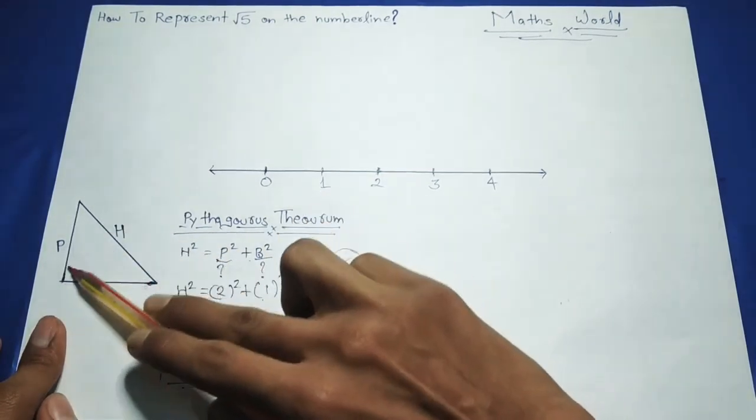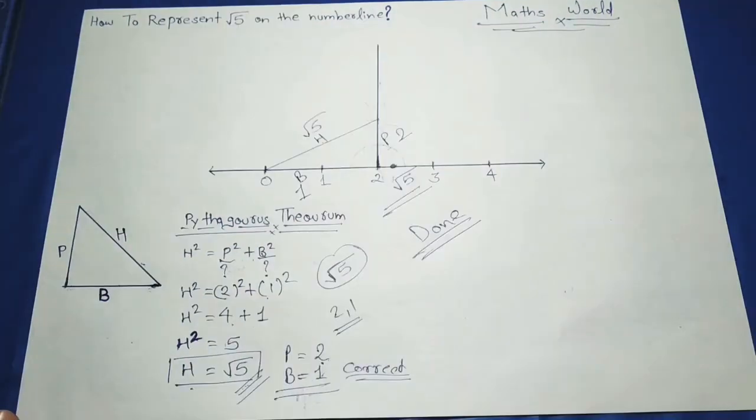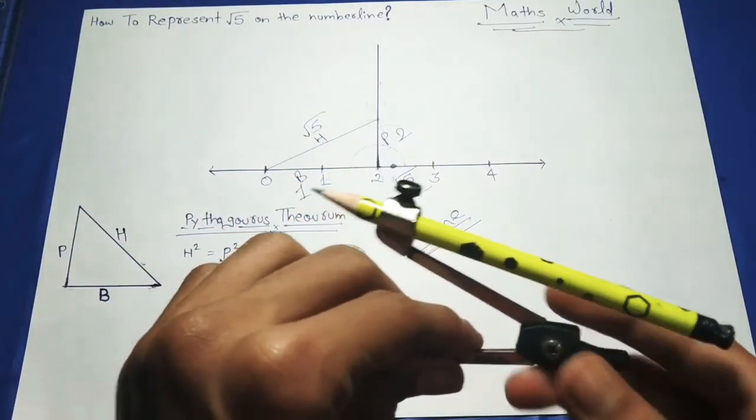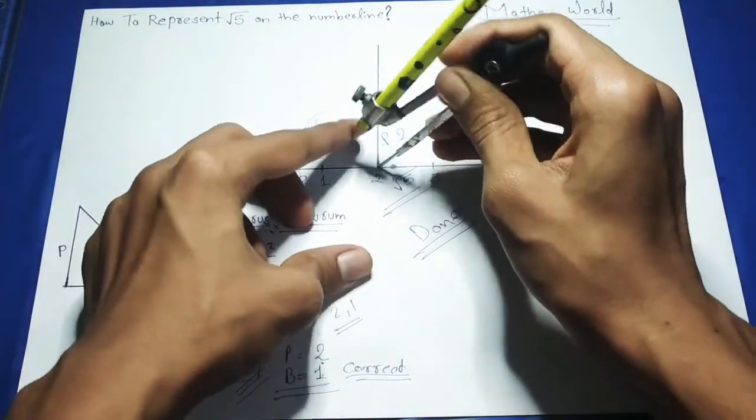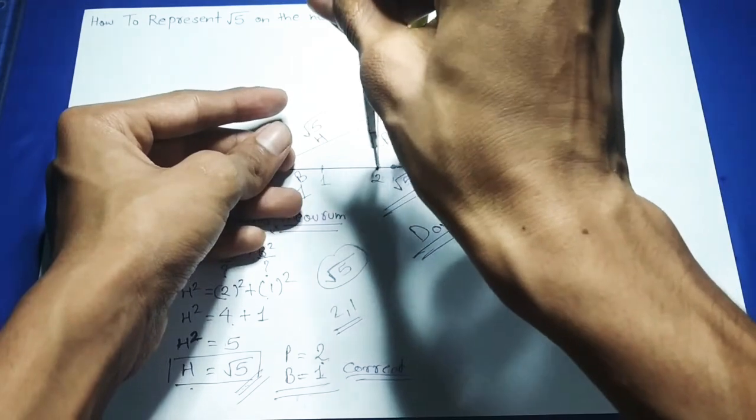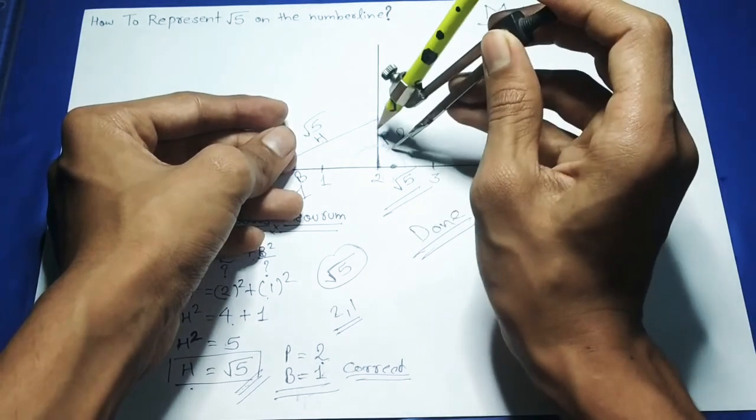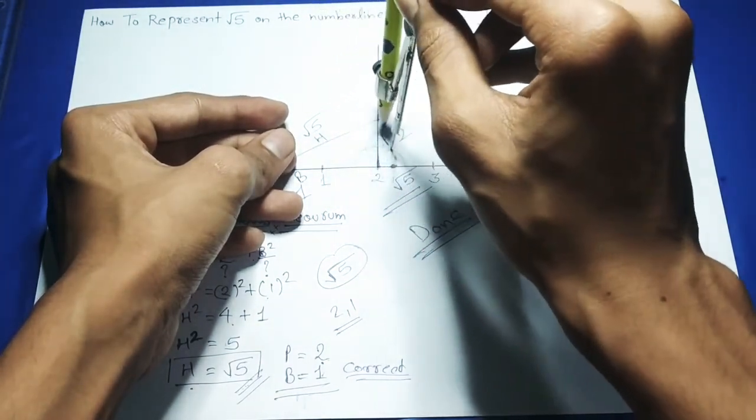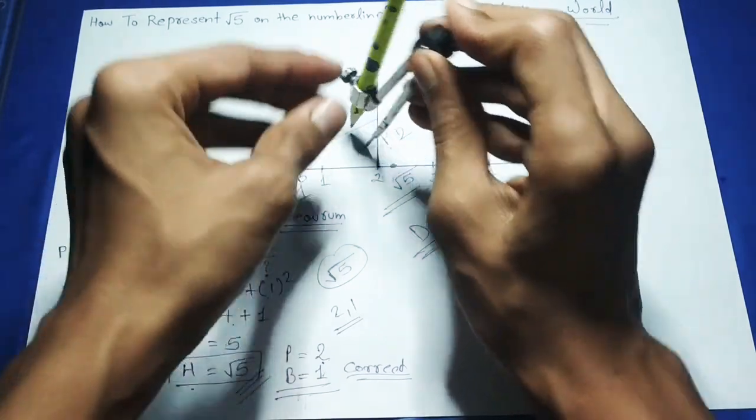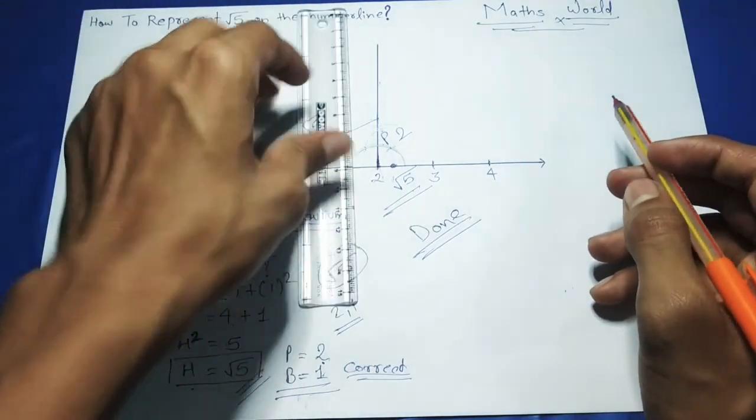This line, which we call perpendicular, will be 2. First we have to draw a 90 degree or straight line. We will use a compass, keep it at 2 and make a small arc like this, and on that make two small cuts to get a line.